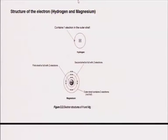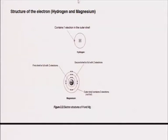For example, hydrogen only has one proton, so there is only one shell with one electron. But if you look at magnesium, it has three shells because it has more electrons. The first shell, close to the center, can only accommodate two electrons. The second shell is full when it has eight electrons. The third and any other shell is also full when it has eight electrons. So different atoms will gain or lose electrons to obtain full outer shells.